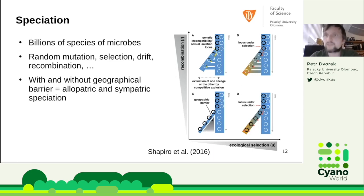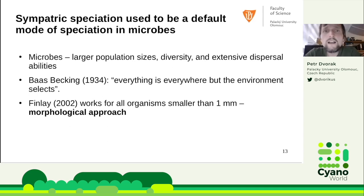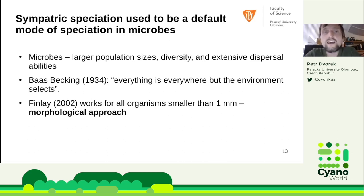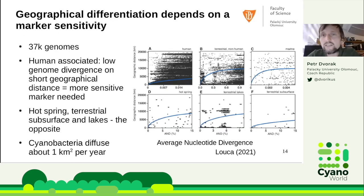Jumping back to microbes: sympatric speciation was suspected to be the default mode of speciation because microbes have large population sizes, extensive diversity, and extensive dispersal — they can just fly everywhere. This was summarized under the famous tenet of Baas-Becking: 'Everything is everywhere, but the environment selects.' Finlay later generalized that for all organisms more than one millimeter, but that was using only the morphological approach. Looking at genomes of prokaryotes specifically, we can see it is actually a matter of marker sensitivity.